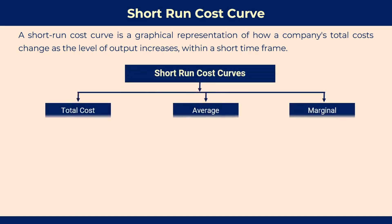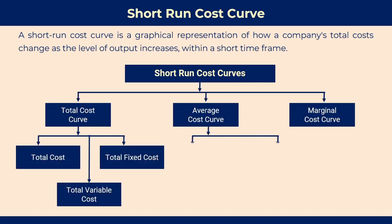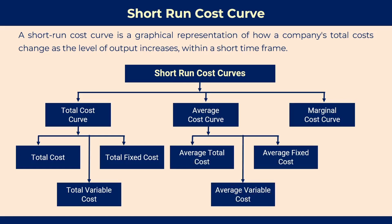Here is the classification of the short-run cost curve. There are three main short-run cost curves: total cost curve, average cost curve, and marginal cost curve. The total cost curve is divided into total cost, total fixed cost, and total variable cost. The average cost curve is also divided into three curves: average total cost, average fixed cost, and average variable cost. Each of these curves represents defined aspects of the firm's cost structure and production decision in the short-run.